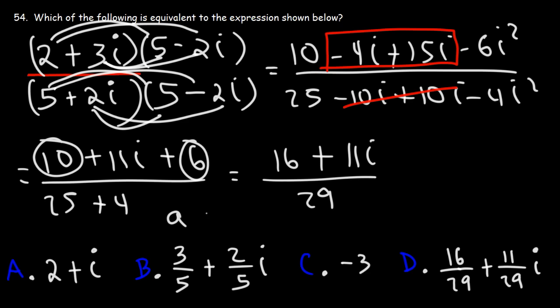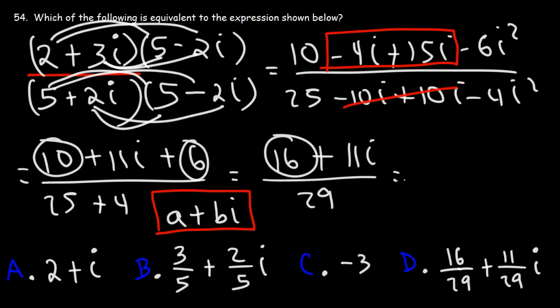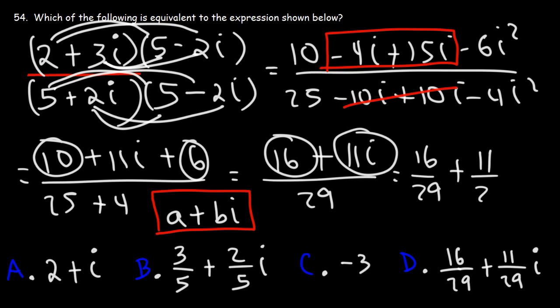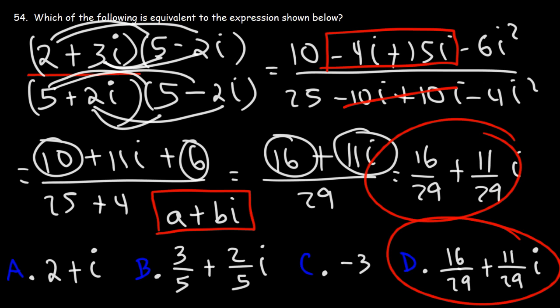Now we need to put the answer in A plus Bi format — that's standard form, where A is the real number and Bi is the imaginary part. So we divide each number by 29: we get 16 over 29, plus 11 over 29 times i. So answer choice D is correct.